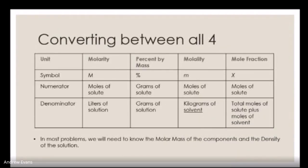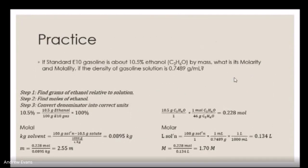Here's a quick summary: Molarity (capital M) is moles per liters of solution. Mass percent is grams per grams of solution as a percentage. Molality (small m) is moles per kilogram of solvent. Mole fraction is moles of component per total moles. In most problems, we will need one of the components and the density in order to solve this. In almost all problems, we will need the molar mass and the density to convert between the two.